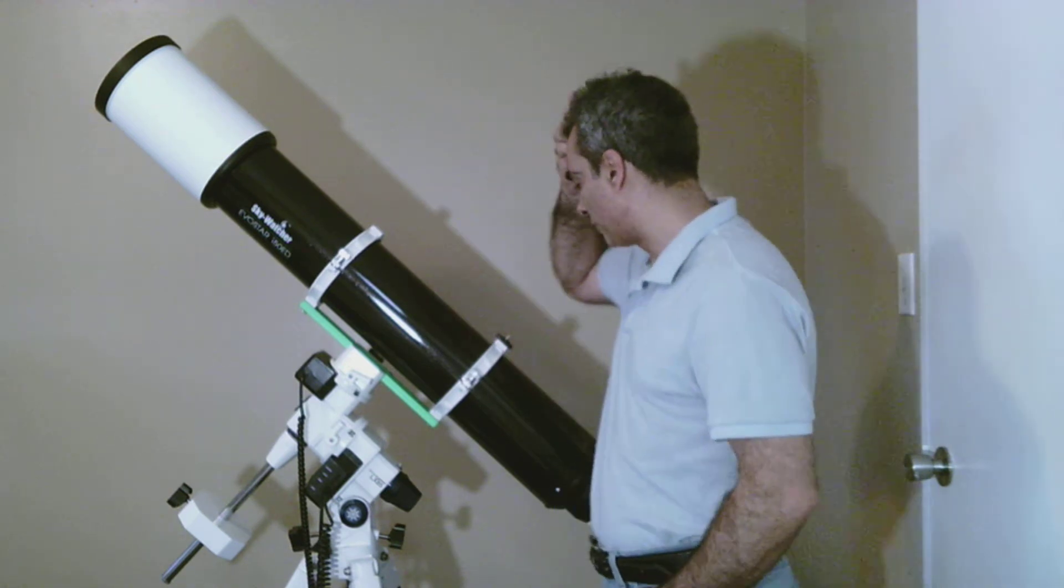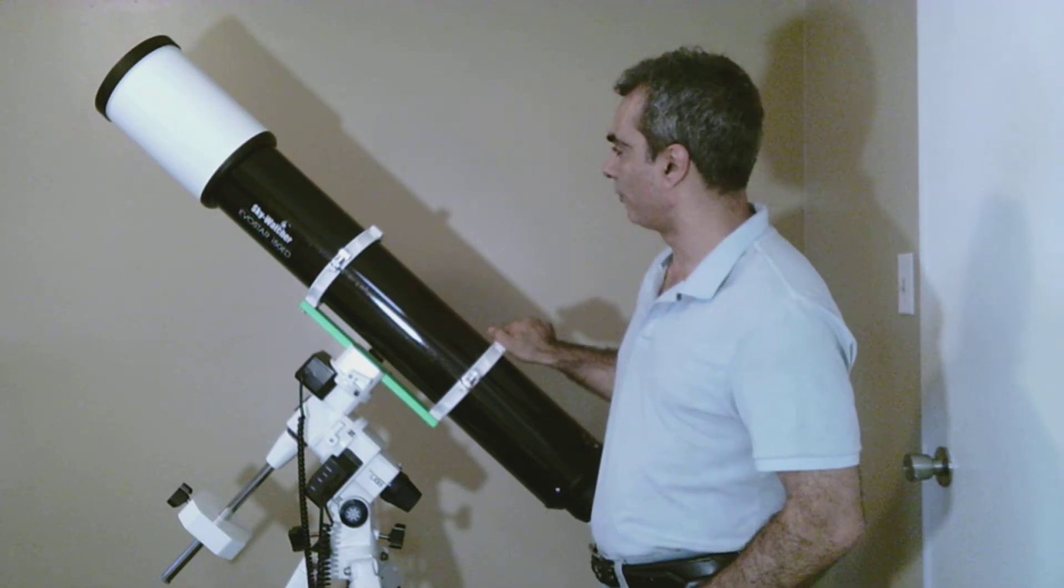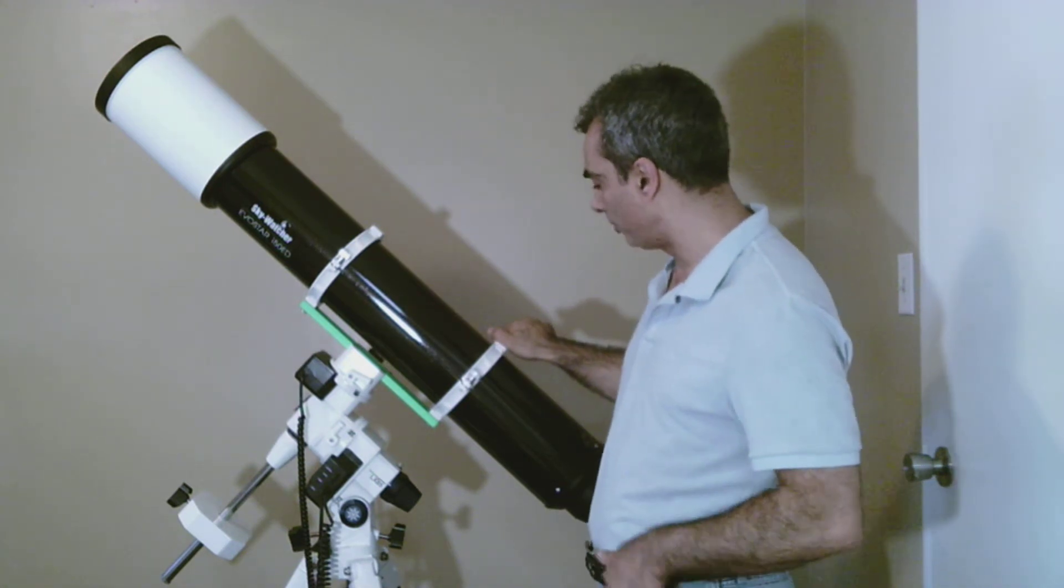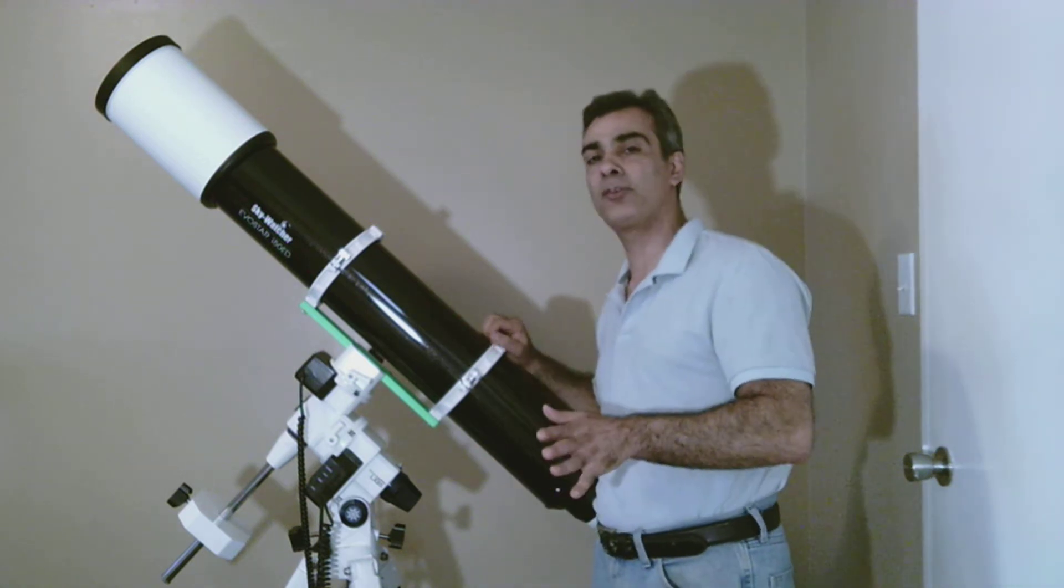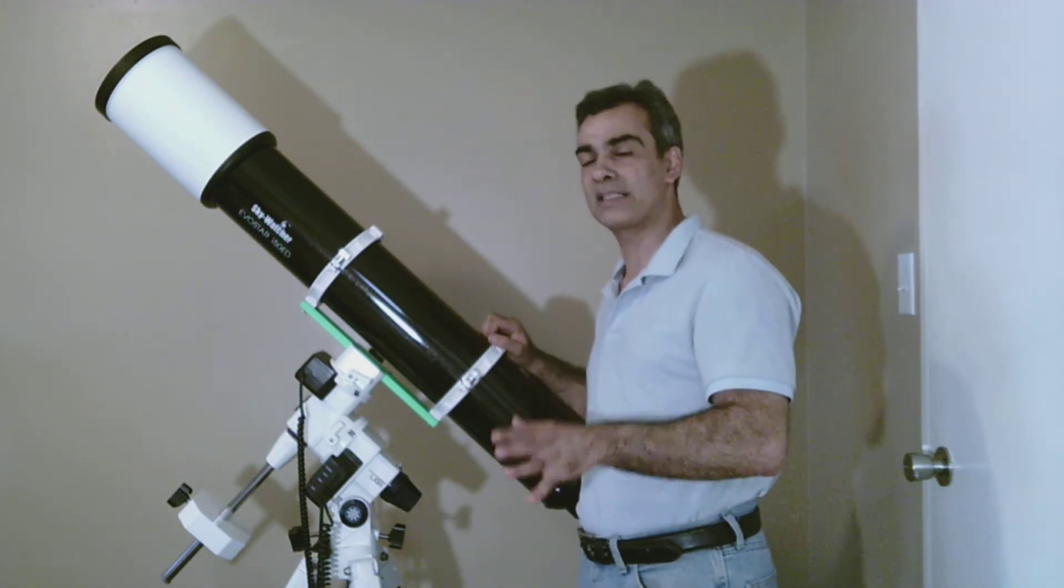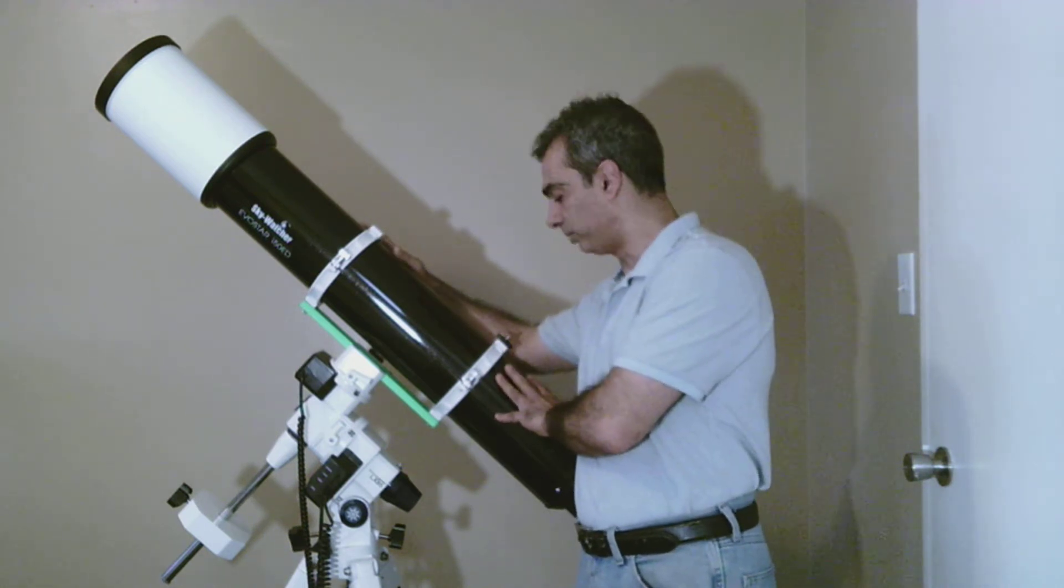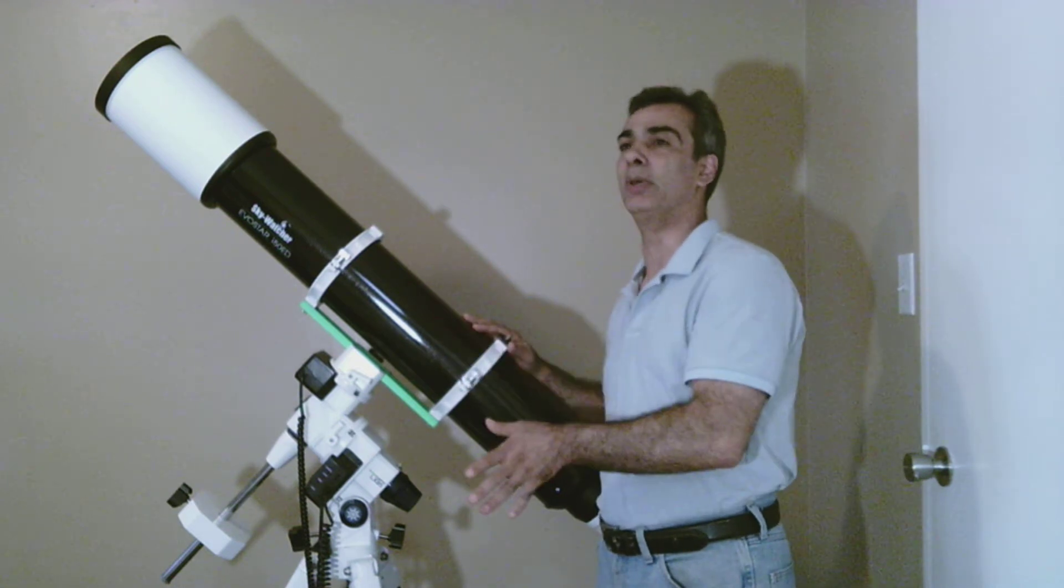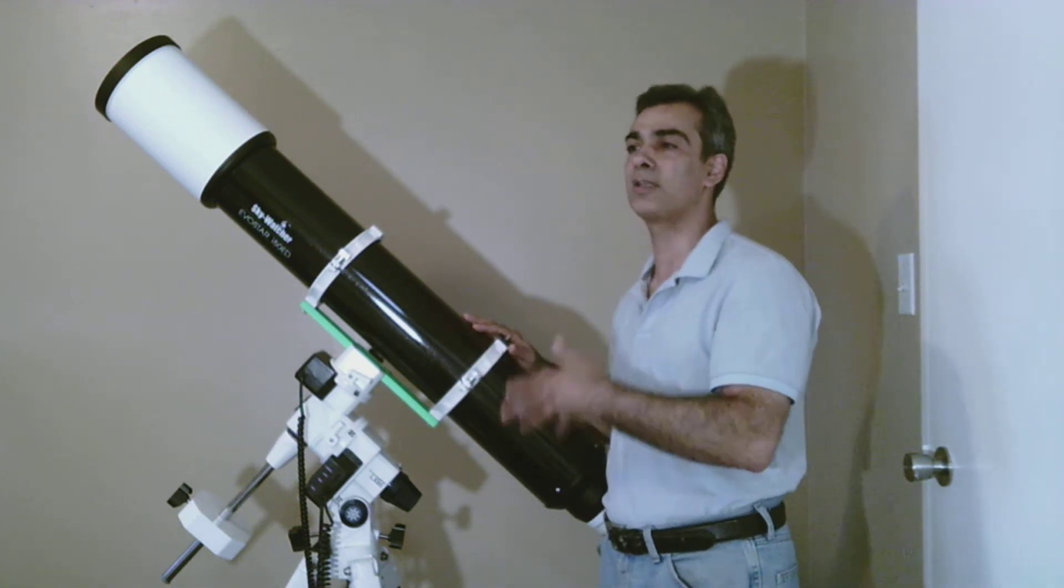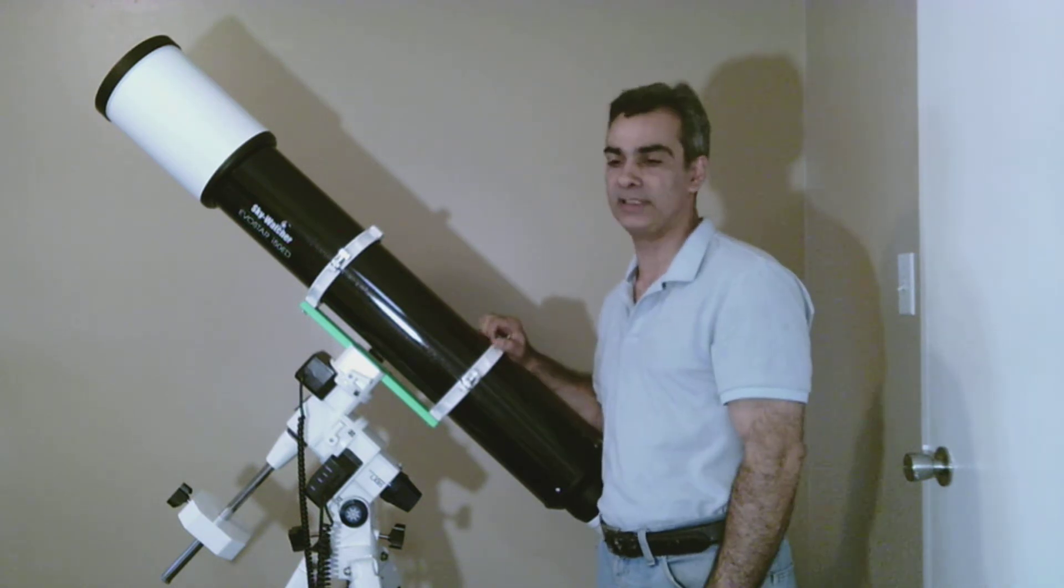So let's get back to this. Skywatcher answered this call and came out with this version. Now, just so people know, the smaller scopes that they make come with the FPL 53 best quality glass in a doublet that you can make. This one is not a triplet. It is also a doublet. But what's funny is, they actually won't tell anybody, including any of your dealers, stores, anybody like that, what type of glass is coming in this one.